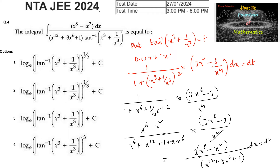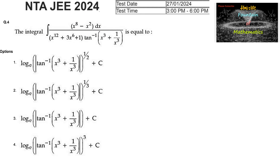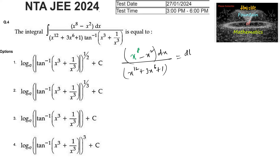So we can clearly observe that (x power 8 minus x square) upon (x power 12 plus 3x power 6 plus 1) dx is equal to dt by 3. Therefore (x power 8 minus x square) dx upon (x power 12 plus 3x power 6 plus 1) is equal to dt divided by 3.